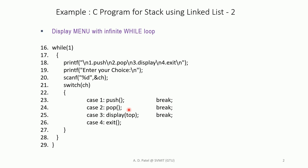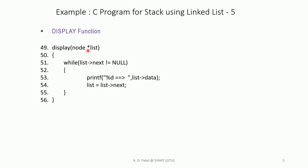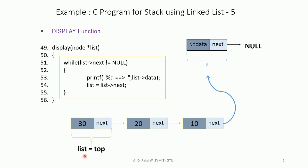To avoid that, we pass top as an argument, which is copied into the local list pointer. The list pointer starts at top and the data is displayed; the pointer then traverses forward until next is equal to null, at which point execution returns to the main function. This way the global top is never modified.